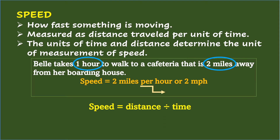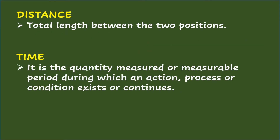Take note of the word 'per,' which means divided by. So the formula for getting the speed is: speed equals distance divided by time. Distance is the total length between two positions. Just like any other equation, the formula for speed can be rearranged to get the other variables. To get the distance, use the formula: distance equals speed times time.